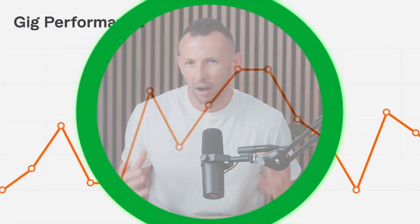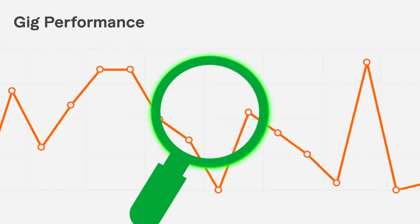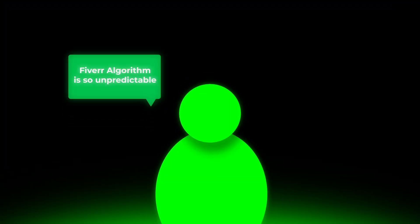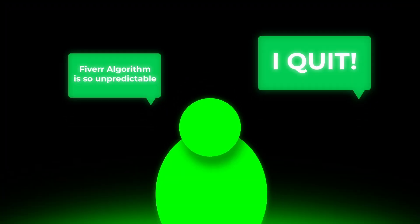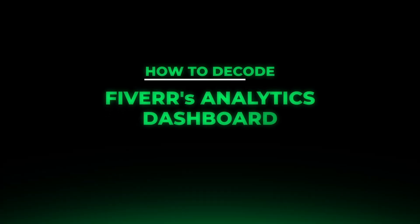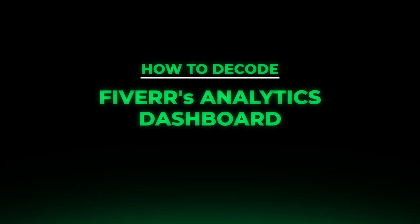If you understand how to read your Fiverr analytics, you'll never be left wondering why your gig isn't selling. Because the data literally tells you what to fix. And most freelancers never figure this out. They launch a gig, wait around, get frustrated when nothing happens, and then either blame the algorithm or quit altogether. But there's a way to see exactly why your gig isn't working and what to do about it. In this video, I'm going to show you how to decode Fiverr's analytics dashboard so you can stop guessing and actually start growing.